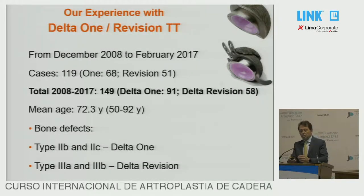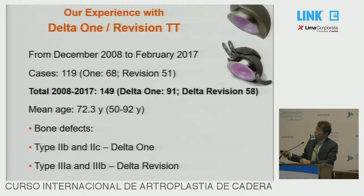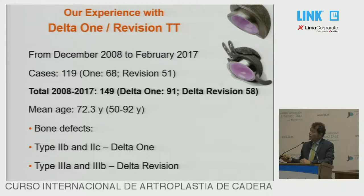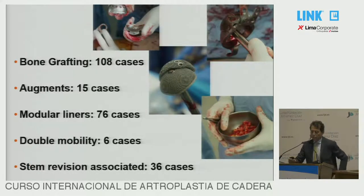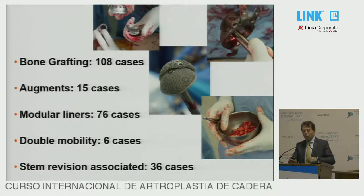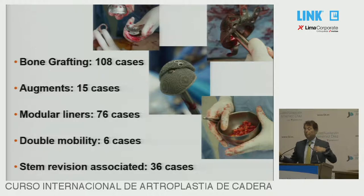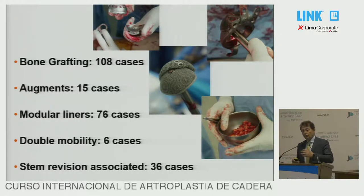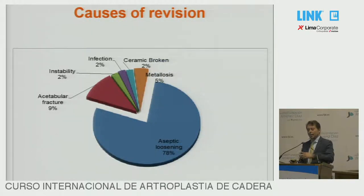Moving to revision cups — Delta 1 and revision TT — this is the number up to February 2017. By end of 2017, the total number was 149. These are the demographics and mean age of patients treated. These are the bone defect classifications: Delta 1 for type 2B and 2C, and Delta revision for 3A and 3B, according to the Paprosky classification. Bone graft was used in 180 cases, augments in 15 cases, modular liners in 76 cases, double mobility in 6 cases. The stem was revised in 36 cases. You can see the typical appearance of augments on top of the cup, with the difference in porosity: 640 microns on the cup, 1,200 microns on the augments — only for cleaning purposes.